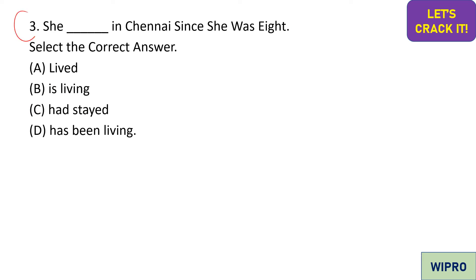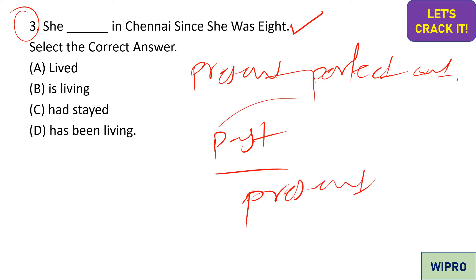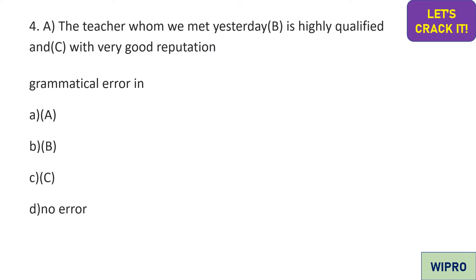Here comes the third question: 'She in Chennai since she was yet.' Observe the tense — it is present perfect continuous. This tense describes an action that started in the past and is still continuing in the present. 'She has been staying in Chennai since she was...' A useful hint: whenever 'since' is used, present perfect continuous tense is mostly applicable.